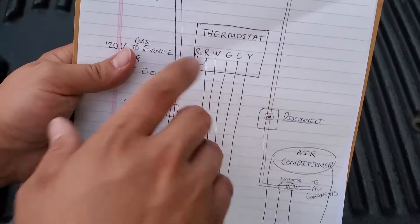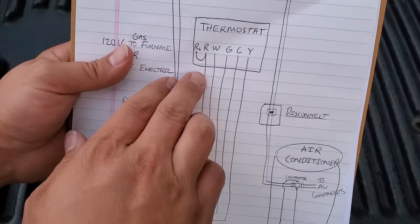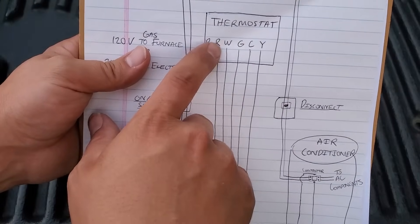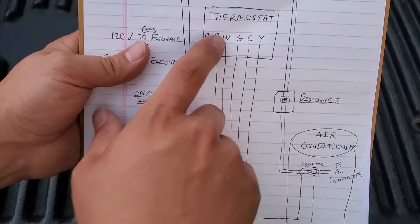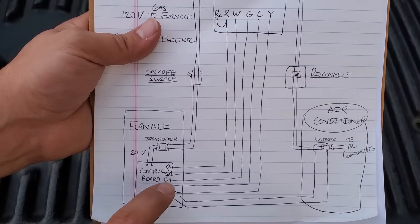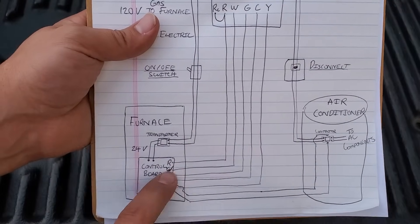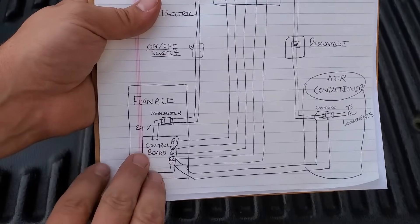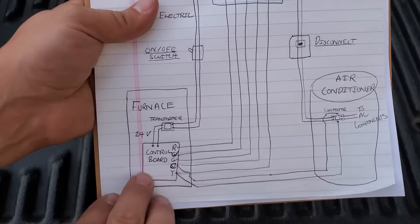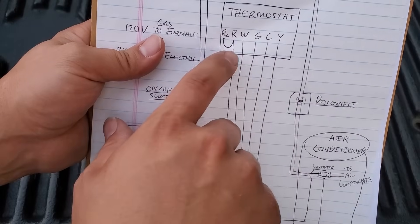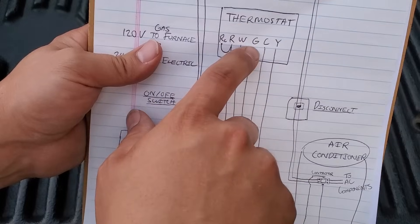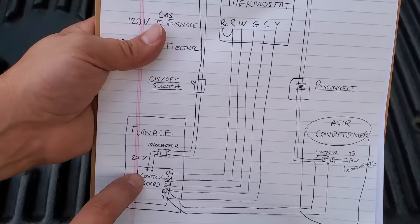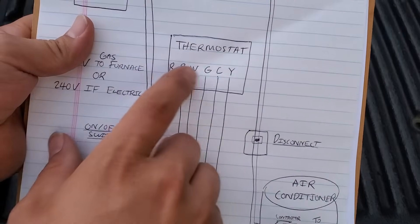Now the thermostat can decide to do different things with that 24 volts of power. If the thermostat wants to turn on the heating, it will jump from the R to the W. R to the W is a call for heat. Therefore, if you were to jumper out from the R to the W down on the furnace control board with just a pair of alligator clips, you could make the furnace come on in heating mode. This is sometimes used in troubleshooting. Instead of putting the R to the W, we put the R just to the G. The G is for the fan, and so that will bring on your furnace fan.